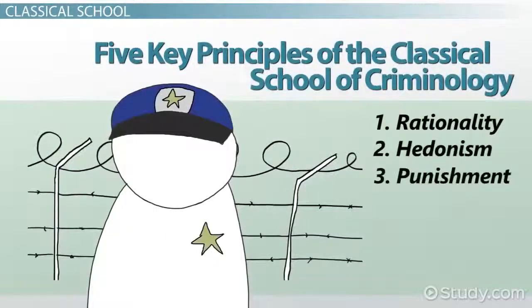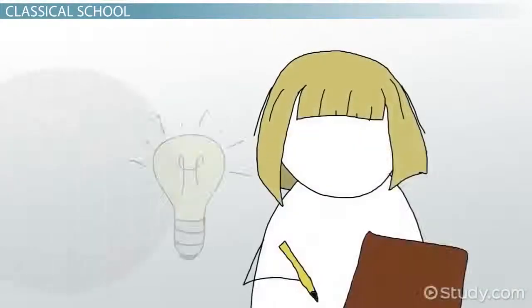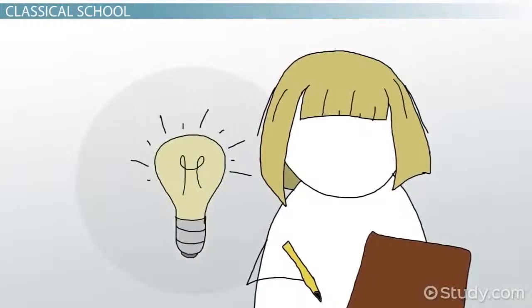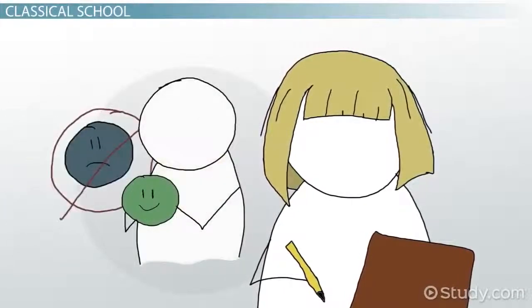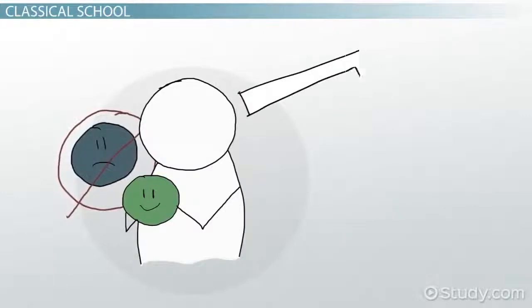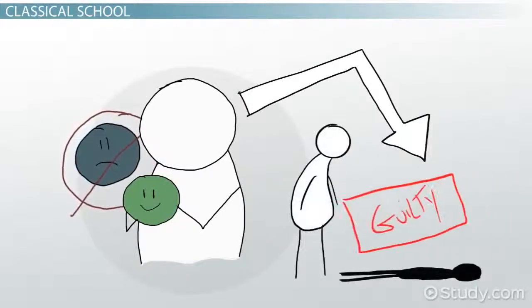Number three, punishment. Remember how we said that a key idea was the idea of hedonism, where people seek pleasure and try to avoid pain? Well, that informs punishment, according to the Classical School.